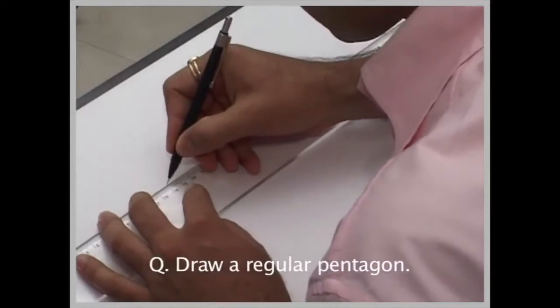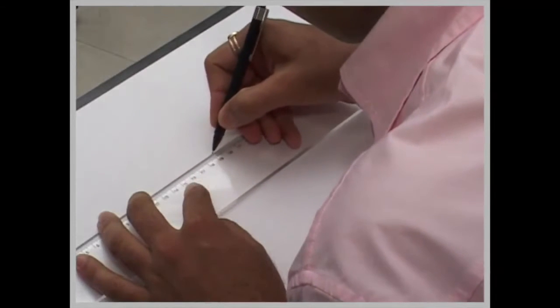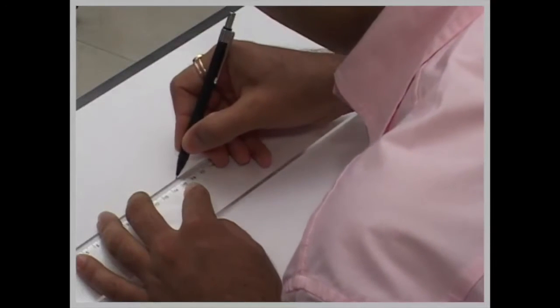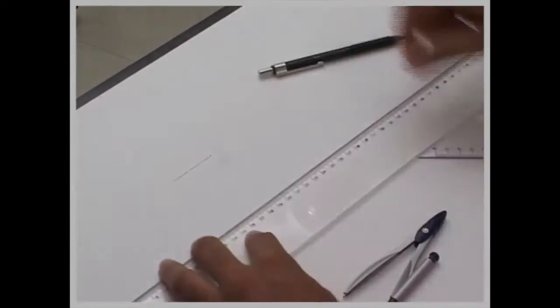Now we will draw different polygons. First we will start with pentagon. First we will take any side, let's say 4cm.